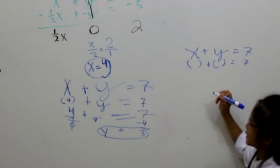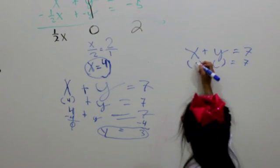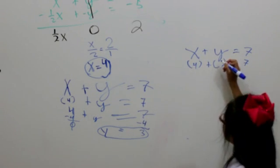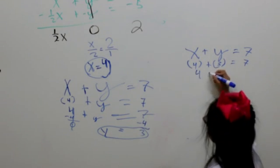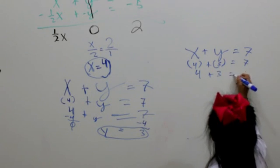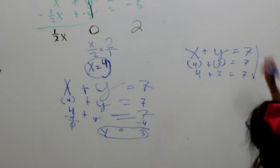What goes in the parentheses? x is equal to 4. So, 4 goes in here. Plus, y is equal to 3. 3 goes in here. You bring the 4 down plus 3 equals 7. Check!